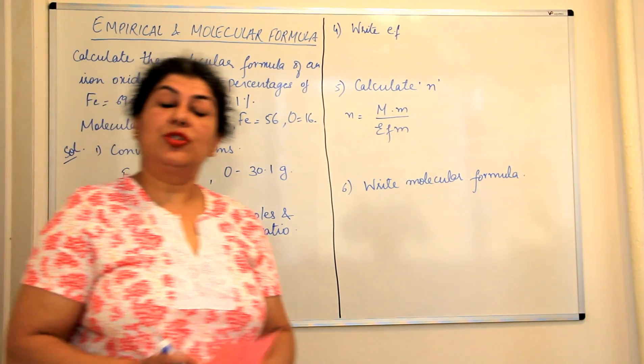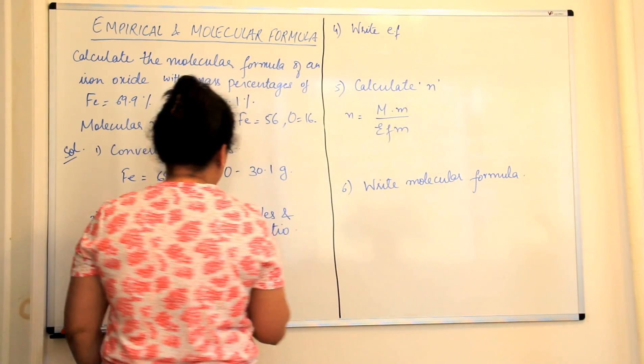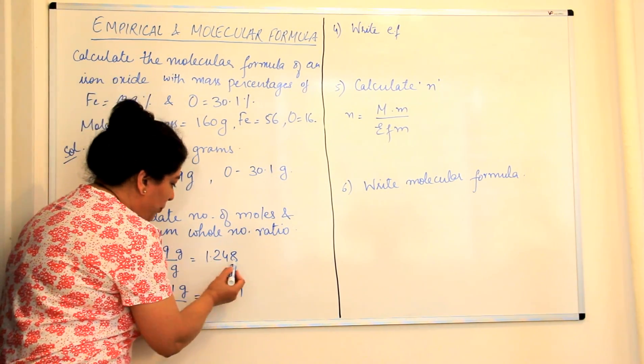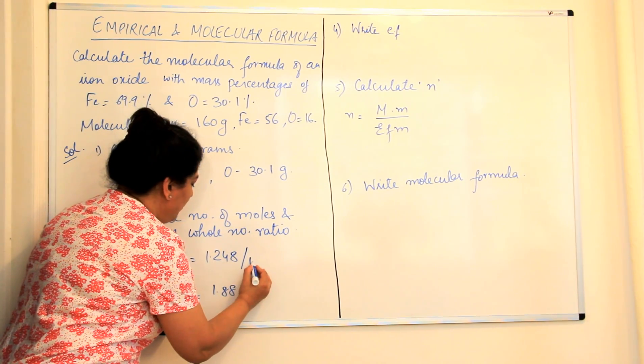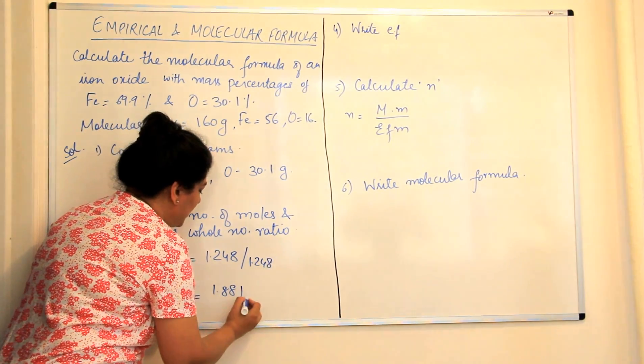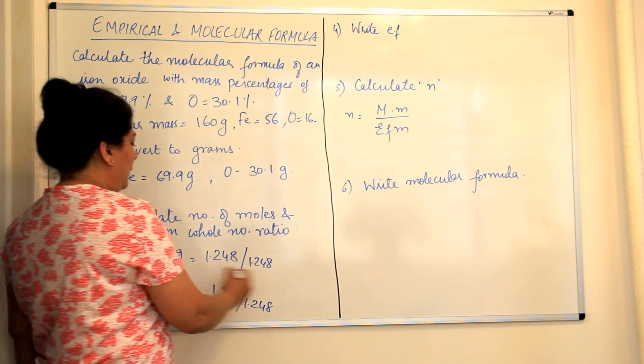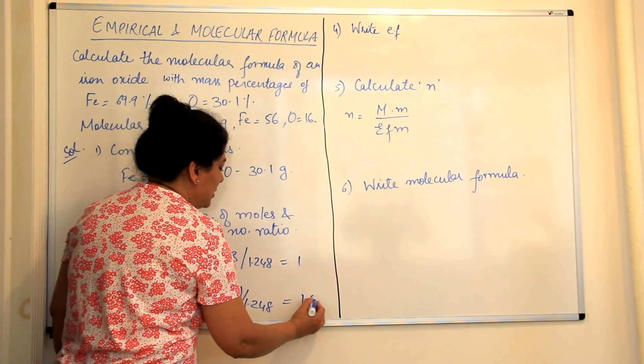In order to find out the minimum ratio between the two elements, now we divide these two by the same value which is the smaller one. 1.2 is smaller than 1.8. Therefore both these are divided by 1.248 and this is also divided by 1.248. When you do this, you get this as 1 and this as 1.5.